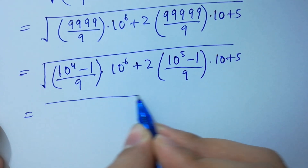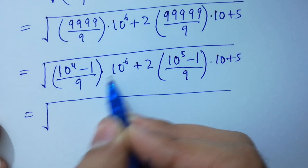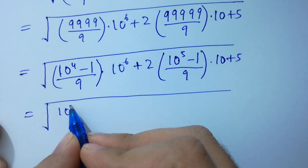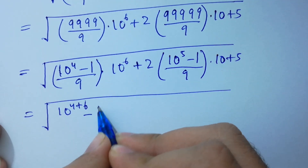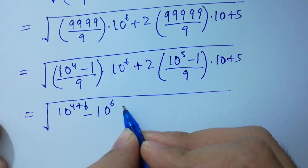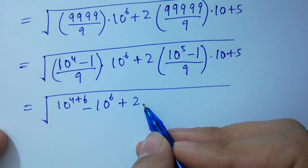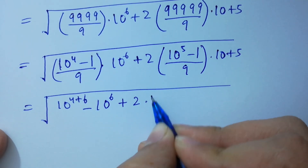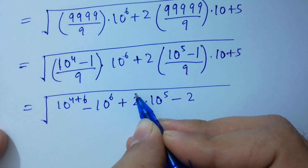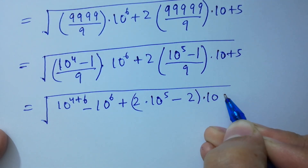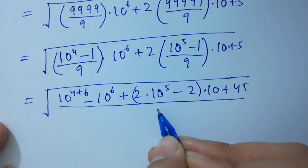Ten to the power four times ten to the power six — base same, powers add — ten to the power four plus six, minus one. Times ten to the power six is ten to the power two, times ten to the power five. Times five is ten, and plus nine times five is 45. We have taken the LCM of 9.